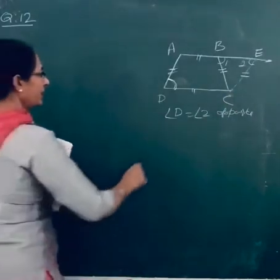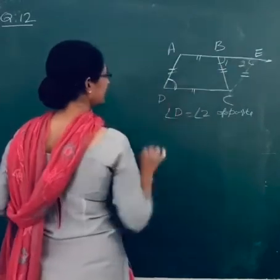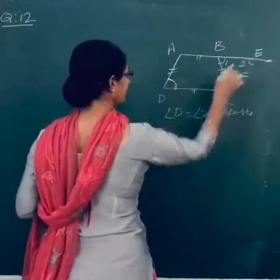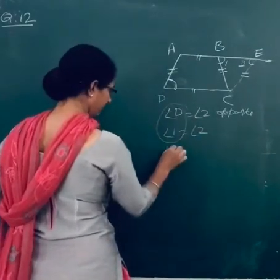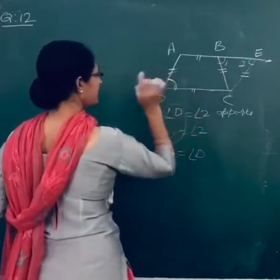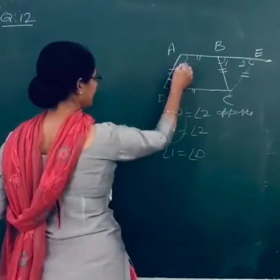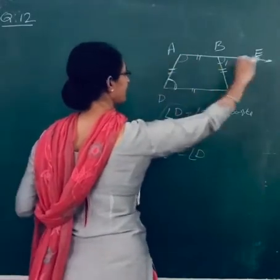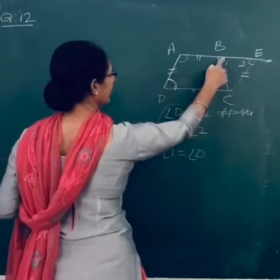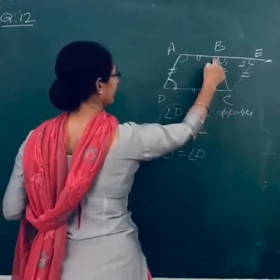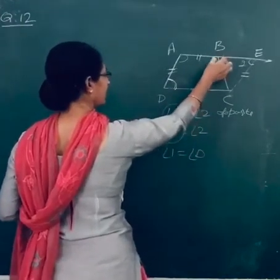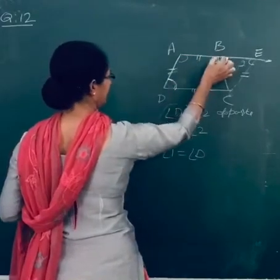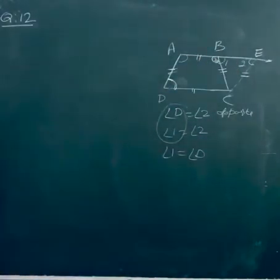Now angle D equal angle 2, opposite angles of parallelogram ADCE. Then angle 1 equal angle D. Now angle A plus angle D equal 180 degree, sum of interior angles on the same side of parallel lines. Then angle 1 plus angle 3 equal 180 degree.